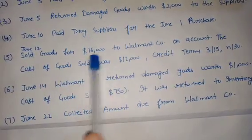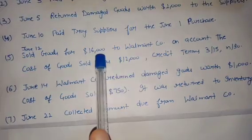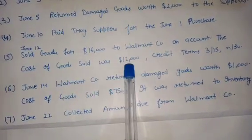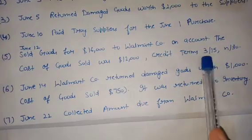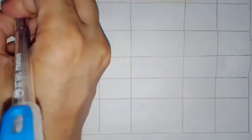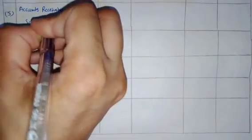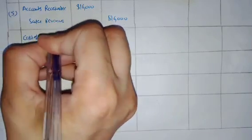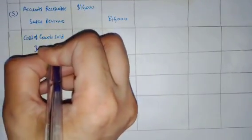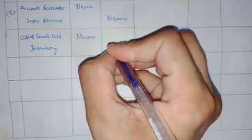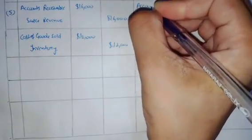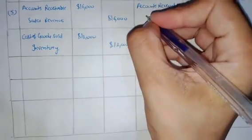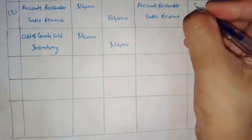On June 12th, goods are sold to Walmart company for $16,000. The cost of goods sold was $12,000 and the credit term was 3/15, n/30. The general entry under the perpetual inventory system will be: Accounts Receivable debit, Sales Revenue credit $16,000, and Cost of Goods Sold debit, Inventory credit $12,000. Under the periodic inventory system: Accounts Receivable debit, Sales Revenue credit $16,000.